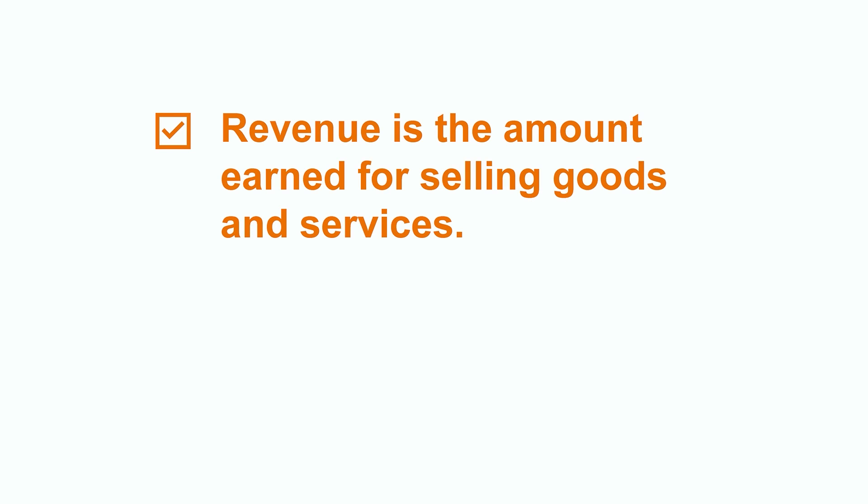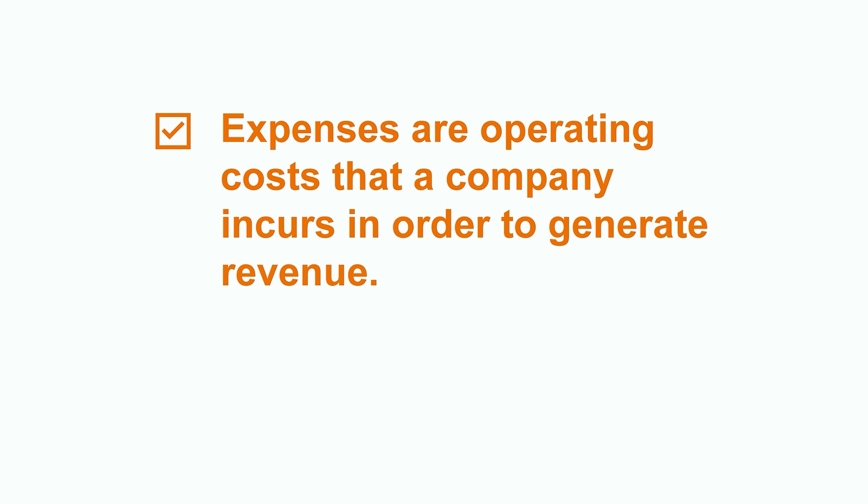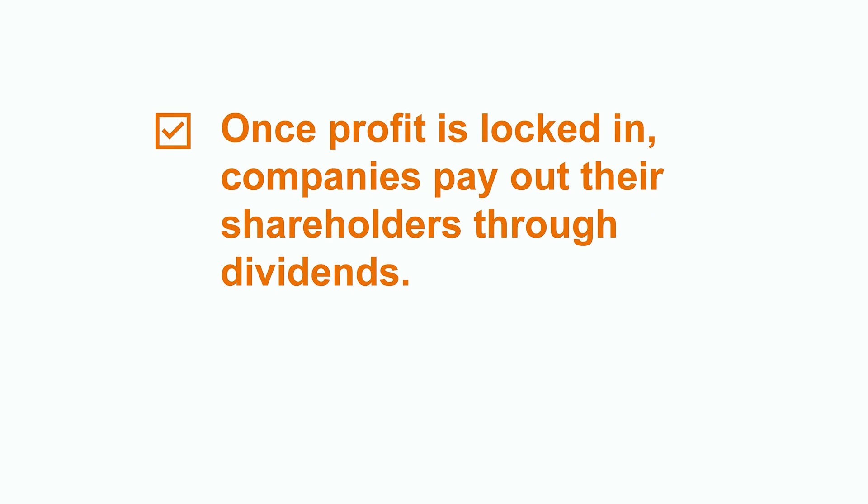Now that we've run through the accounting process, let's recap what we've talked about in this video. Revenue is the amount earned for selling goods and services. Expenses are the operating costs that a company incurs in order to generate that revenue. There are various accounting rules that dictate when both the revenue and expenses can be recorded so that the profit can be accurately reflected. And lastly, once that profit is locked in, companies ultimately pay out their shareholders through dividends. Whether you're a student, investor, or business owner, knowledge on these concepts is crucial to developing your accounting skillset. If you're interested in learning more, please feel free to check out our additional videos on many more related topics.